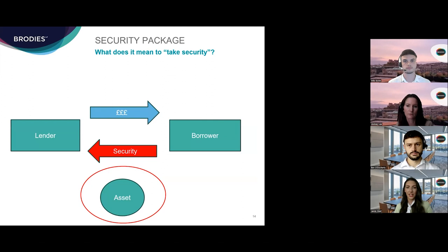The lender will usually request collateral warranties or third-party rights in respect of key professional consultants as part of its security package. The precise allocation of risk and responsibility between contractors and professional consultants will always depend on how the development documents, including construction contracts, have been structured. Finally, the project monitor is the lender's independent representative, who typically signs off or certifies aspects of the development that require the lender's involvement — for example, drawdown requests to meet development costs or reallocations within the budget.